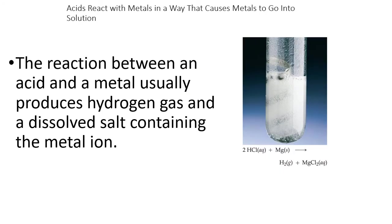For regular metals — if you have a reaction between an acid and a metal — this is basically the single replacement reaction we did before. The hydrogen is released as hydrogen gas, and the metal cation combines with the anion to make a salt. So when an acid combines with a straight metal, it produces hydrogen gas and a salt.